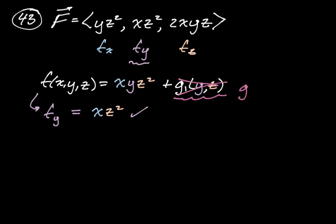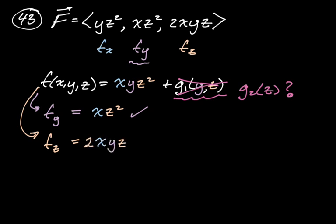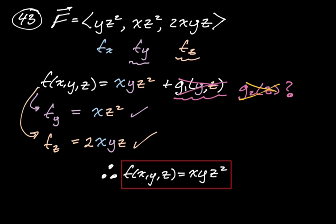But there might still be a function of just z. Going back to our candidate potential function xyz² and finding partial z gives 2xyz. Comparing that to actual partial z, which is 2xyz — they match exactly. So there isn't just a function of z either. The potential function is xyz².